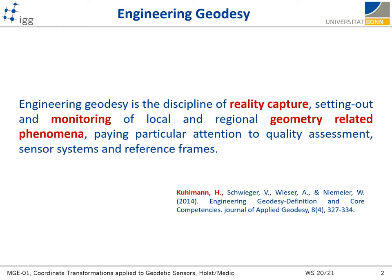Just to be on the same page, here is a definition of engineering geodesy derived recently by Professor Kuhlmann, one of the teachers on this master study, and his colleagues. In short, it is a discipline of reality capture and monitoring of geometry-related phenomena. We use different sensors to capture the geometry of our environment and use coordinate systems, reference frames, and coordinate transformations to describe this geometry and how it changes over time. The main accent is placed on the quality of our geometric products. If you are interested in our work, I recommend reading the article shown at the bottom of this slide.